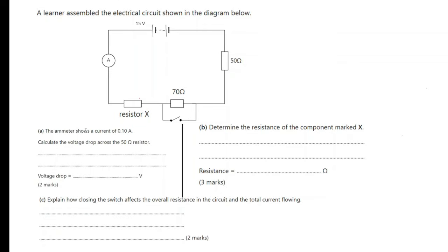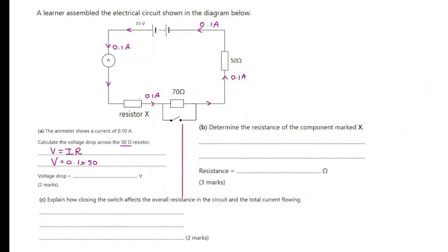Part A. The ammeter shows a current of 0.1 amps. So we know the current comes out from the positive terminal and the ammeter reading is 0.1 amps — the same current of 0.1 amps flows through the whole series circuit and back to the starting point. Calculate the voltage drop across the 50 ohm resistor. All we need to do is write V equals IR: V equals 0.1 multiplied by 50, which gives 5 volts.